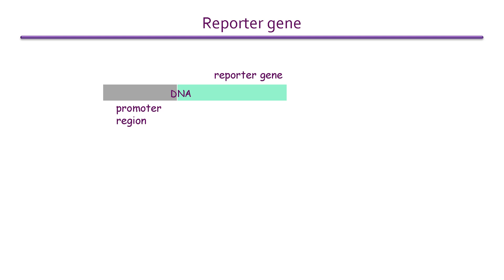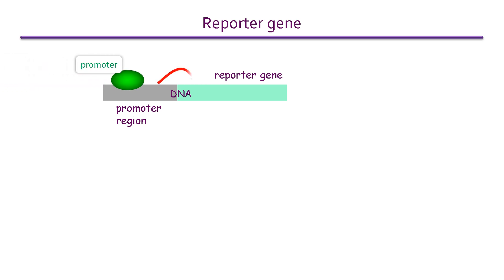Reporter genes are gene sequences that code for a protein that has a property allowing it to be easily detected. A length of DNA containing the reporter gene and a promoter region is incorporated into a cell line. When the promoter is present, it stimulates the transcription of the reporter gene into messenger RNA, and translation into the reporter protein follows.